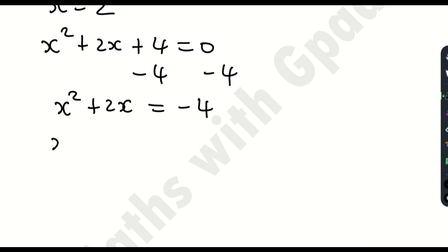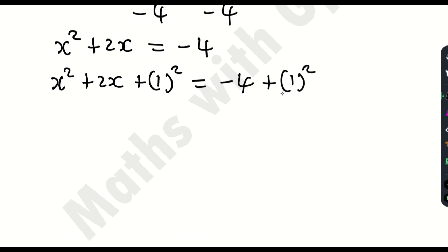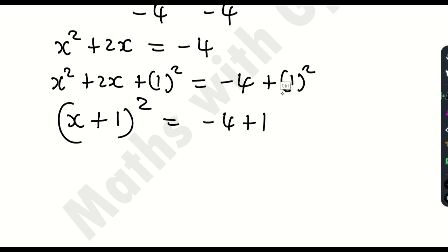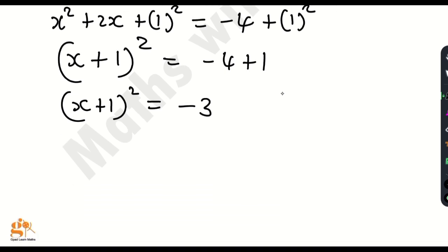Look at the coefficient of x, which is 2. Divide it by 2 to get 1, then square it to get 1. Add this to both sides: x squared plus 2x plus 1 equals negative 4 plus 1. Now I can factorize the left side — pick the first term without the square and the constant without the square, put in a bracket and square it. So (x plus 1) squared equals negative 3.